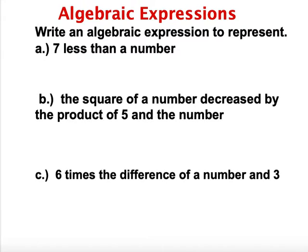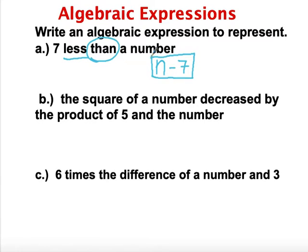We're going to first start talking about some language. So in an algebraic expression, we need to understand some of the words. It says write an algebraic expression to represent what 'seven less than a number' means. We understand that 'less than' means subtraction, so we're going to take 7 from some arbitrary number. We'll call that number n, and write the expression n minus 7.